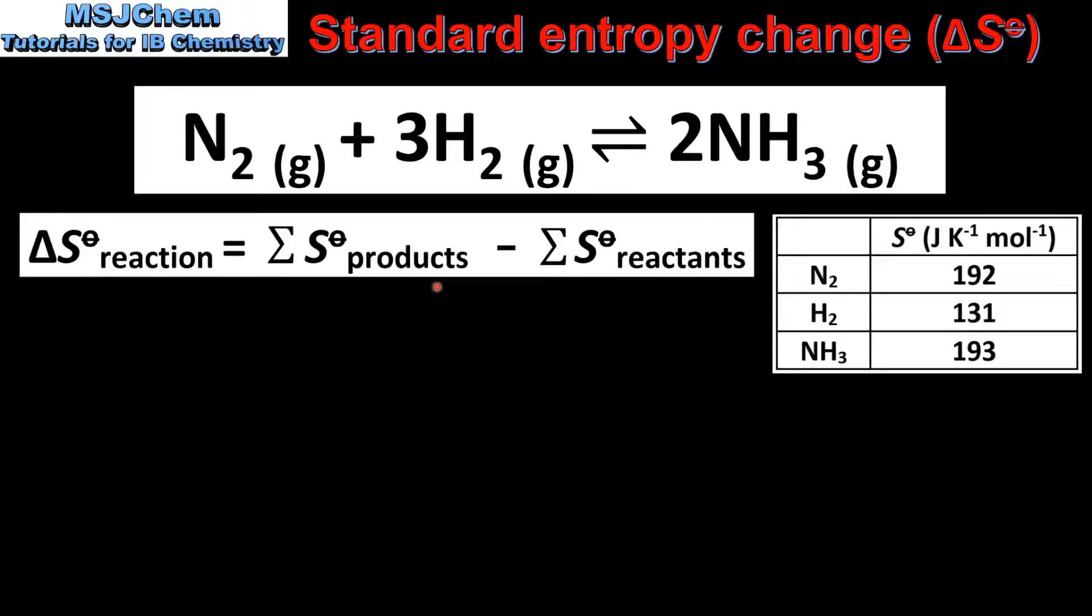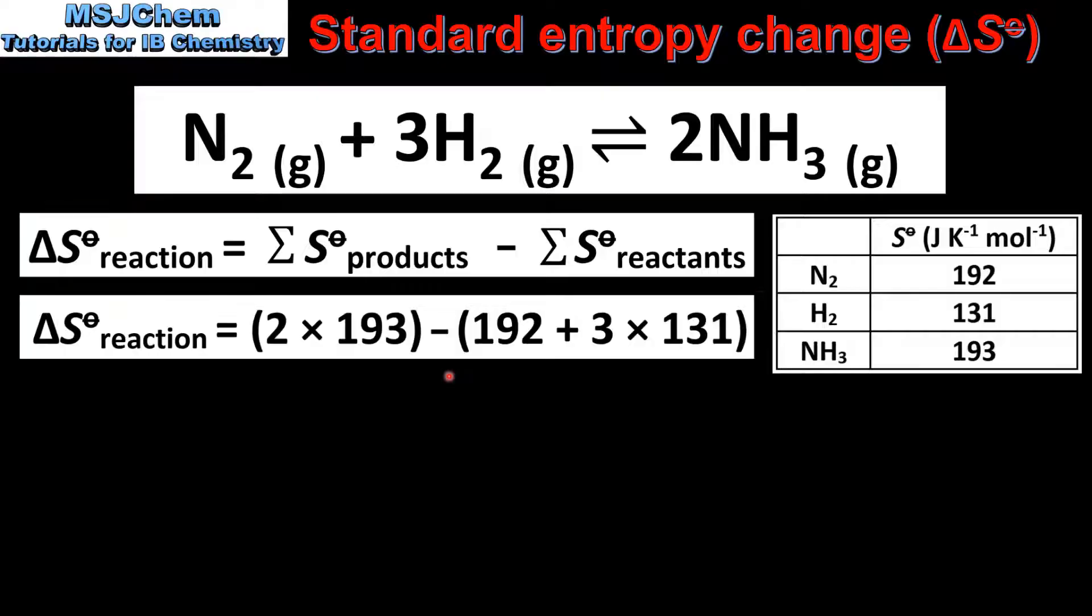Here we have the equation that we're going to use, together with absolute entropy values for the reactants and products. Next we input the values into the equation, making sure that we multiply the absolute entropy values by the coefficients in the balanced equation.